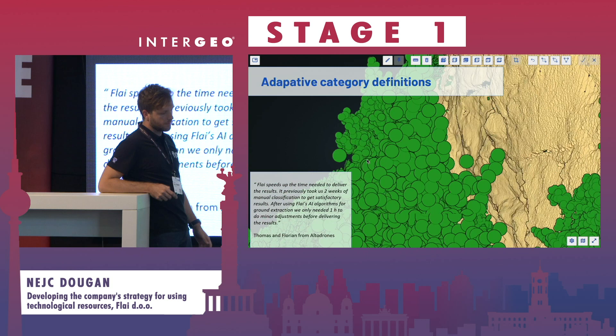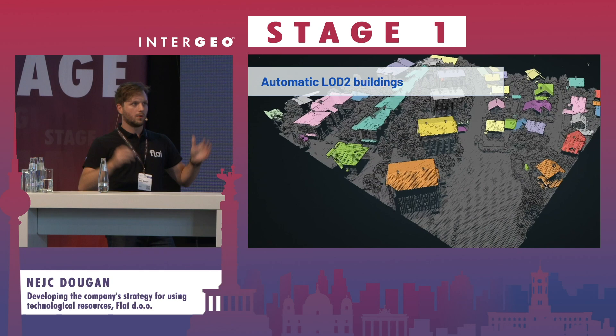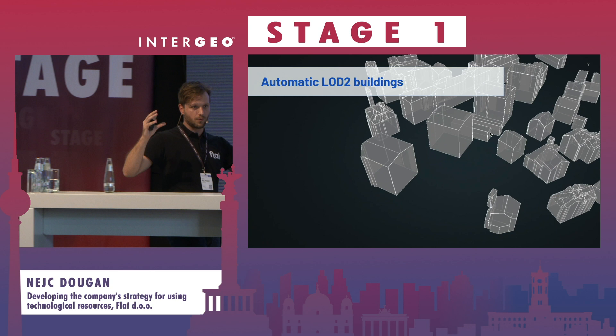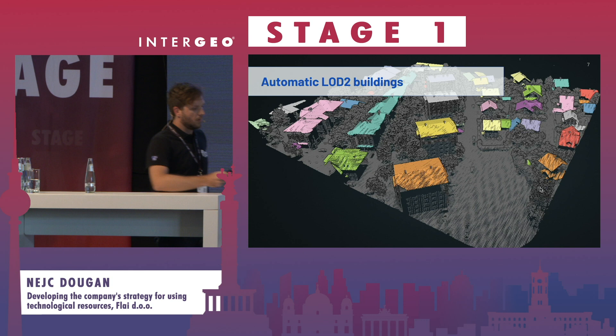The next use case is LOD — level of detail — for building modeling. As already mentioned, a lot of times we do not stop at point cloud classification but want to go to vectorization or some sort of compression of the data. In this particular case, we are automatically generating 3D level-of-detail building models and also exporting footprints of each individual building.